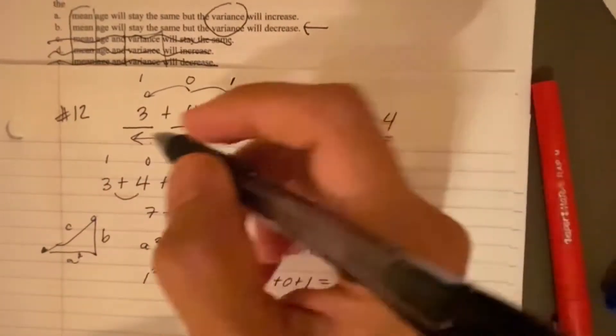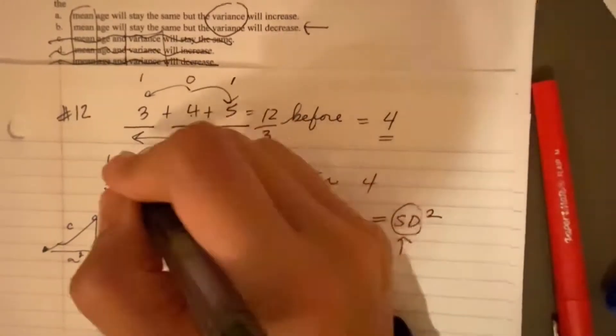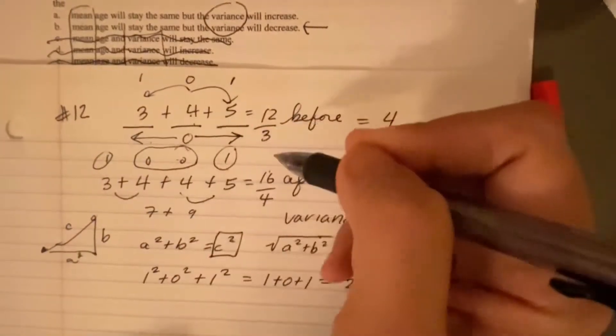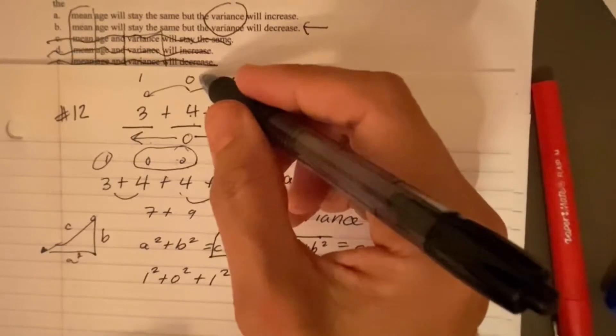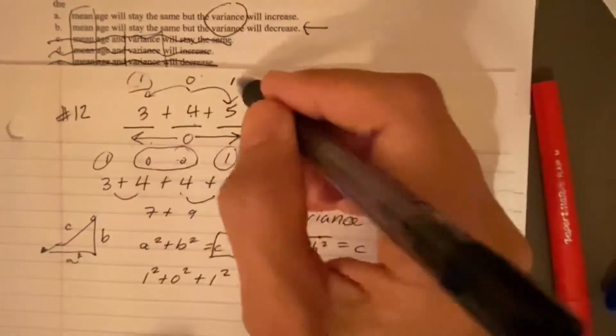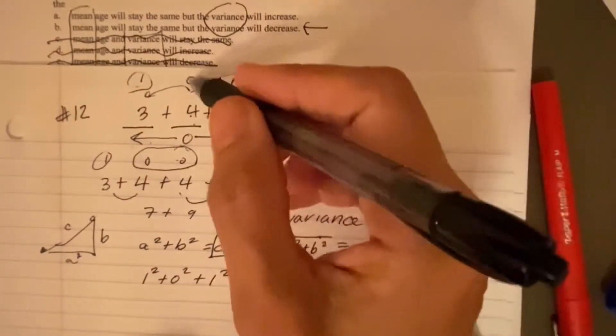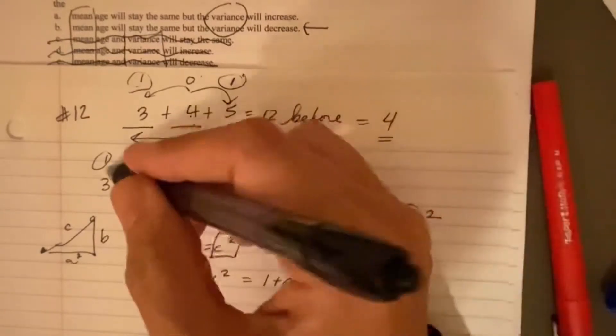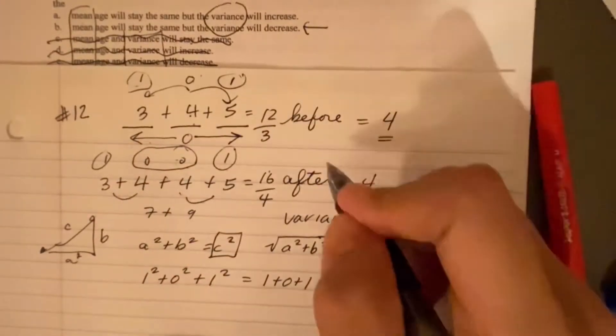And I think that this should make sense. Now on average, half of the numbers are on the mean, half are off the mean. Whereas before two thirds of the numbers were off the mean, one was on the mean. So the spread outedness is less.